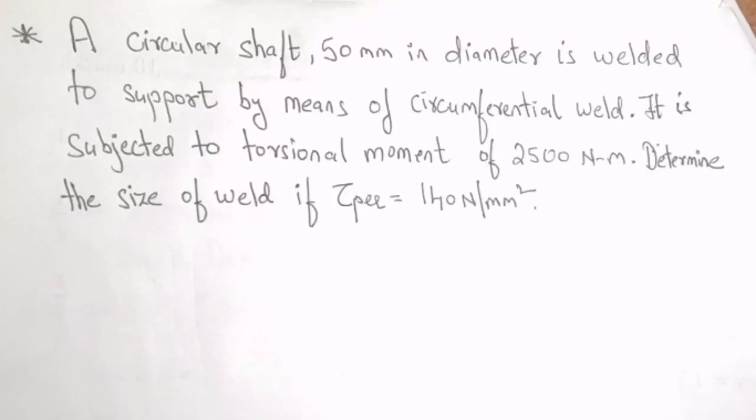Let us try to apply the relation in the given problem. The problem says a circular shaft 50 mm in diameter is welded to a support by means of a circumferential weld. It is subjected to a torsional moment of 2500 newton meter. Determine the size of the weld if shear stress permissible is 140 newton per mm square.